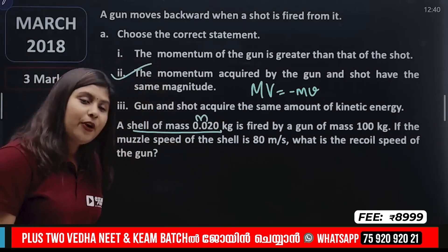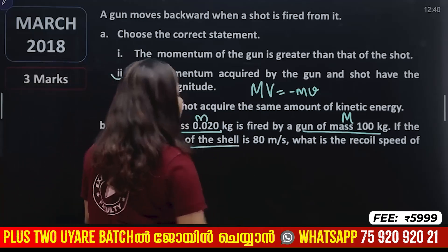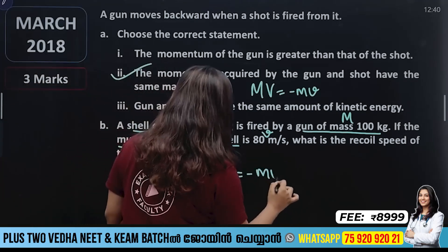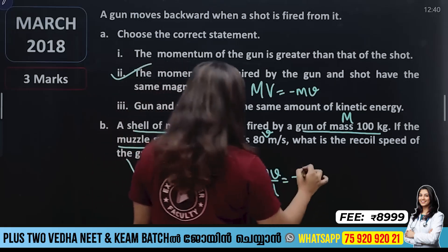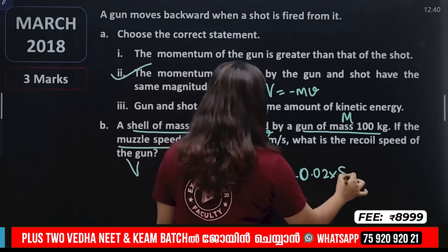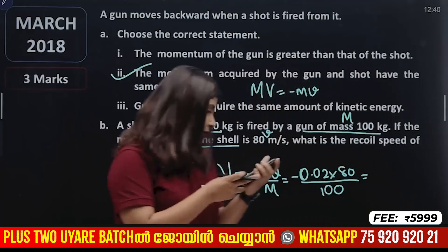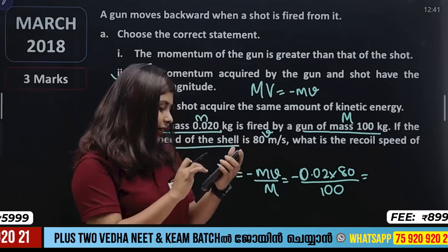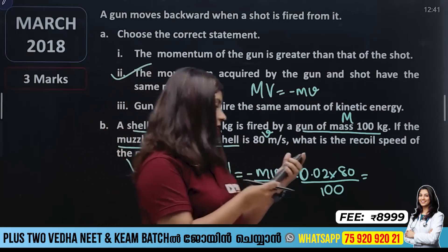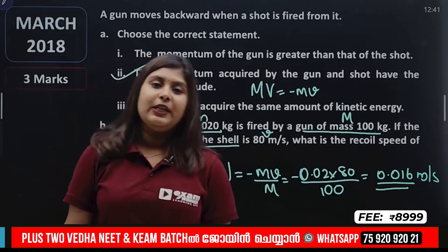A shell of mass small m equals 0.02 kg is fired by a gun of mass capital M equals 100 kg. Using V equals minus small m times small v divided by capital M: V equals minus 0.02 into 80 divided by 100 equals 0.016 meters per second.